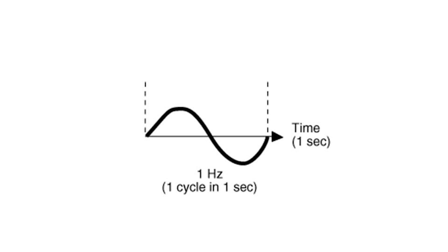Frequency, in its most pragmatic definition, is the exact number of times or cycles the wave of a particular sound moves through the air per second. Hertz is the unit of measurement used to identify frequency. One complete cycle that travels in one second is one hertz.